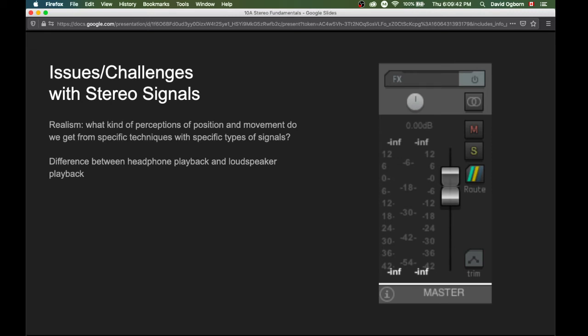Stereo signals involve having a left signal and a right signal that are different than each other. When we listen to that with headphones, we're listening to those two signals very directly. Our left ear is getting the left signal and our right ear is getting the right signal. When we play that back in a room with loudspeakers, it's not so straightforward.